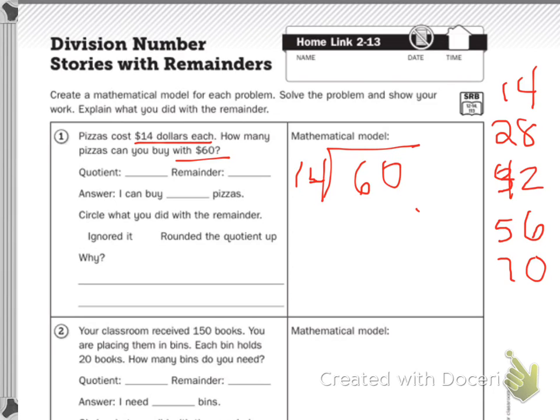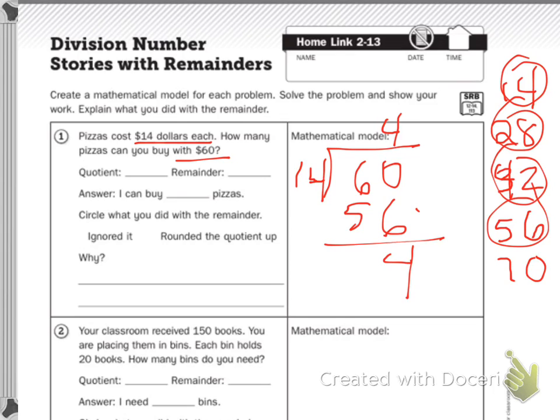My biggest number without going over is 56. So I have 1, 2, 3, 4. And I put it in my ones spot because I can't go in the tens. So 14 times 4 is 56. And then I have $4 left over.